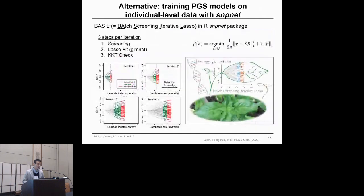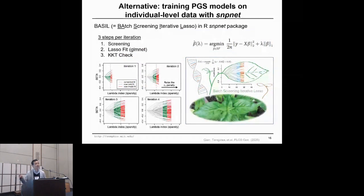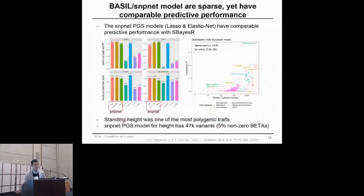We considered an alternative paradigm: fitting the polygenic score directly on individual-level genotype and phenotype data, without going through GWAS summary statistics. We specifically use the BASIL algorithm — a batch screening iterative LASSO algorithm — implemented in the snpnet package we developed in collaboration with the statistics department. This approach mitigates computational burden through an iterative procedure to fit the generalized LASSO regression model. We previously showed that this method has comparable predictive performance to modern Bayesian regression models, and due to sparsity, the resulting polygenic score is much sparser.